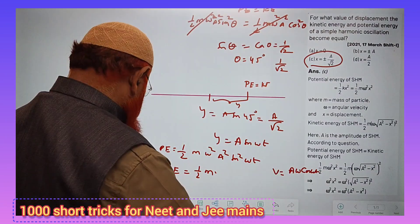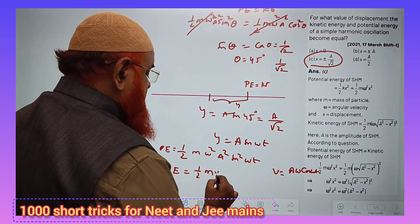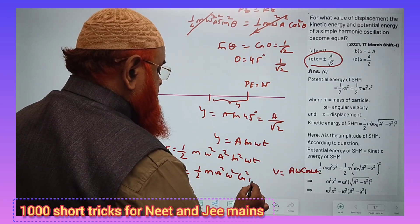So instead of v square, I will substitute this formula. Then we get a square omega square cos square omega t.